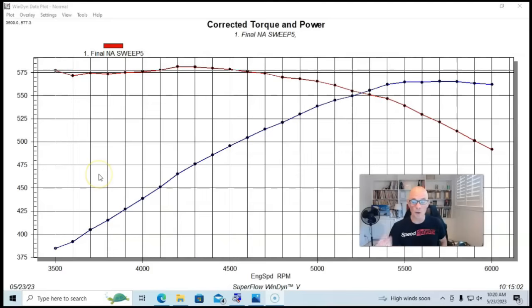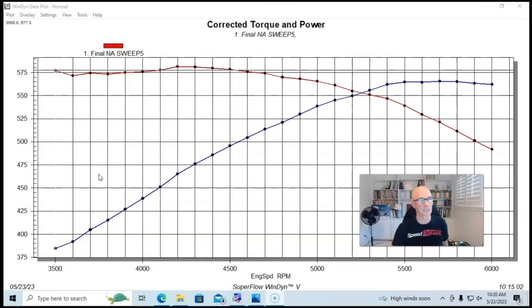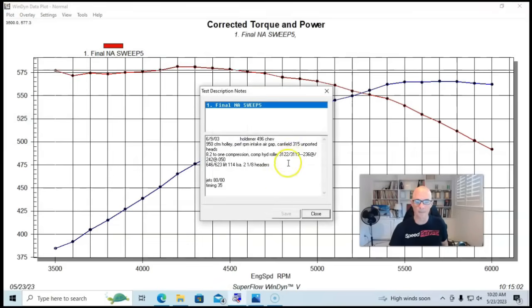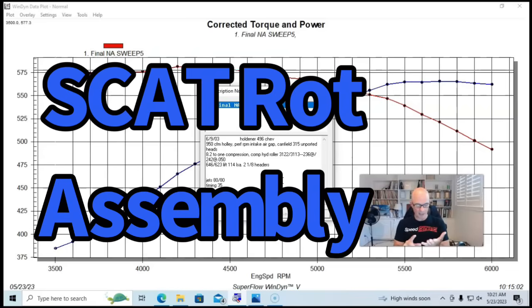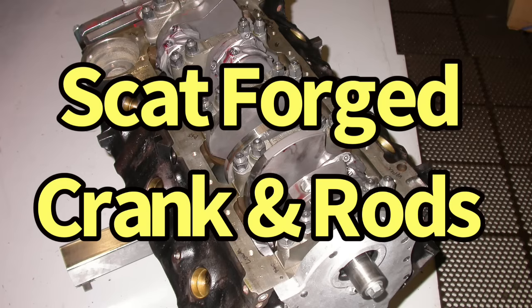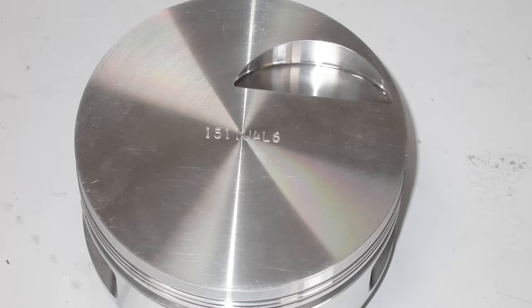So let's take a look at our new NA combination. We took that motor, that 461, actually I was saying it was a 468, it was actually a 461. We took that motor apart and upgraded it with a stroker assembly from SCAT. We had the 4.25 inch stroker crank. We had forged rods and we had forged flat top pistons.